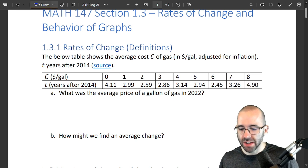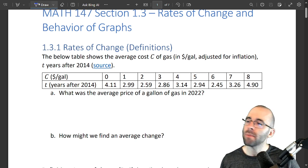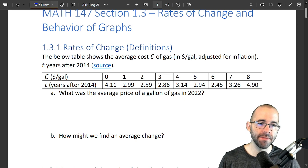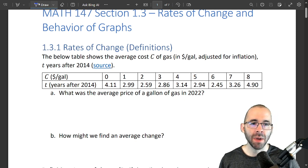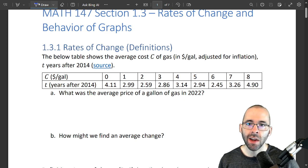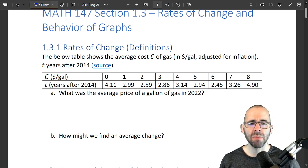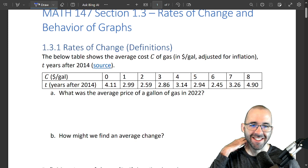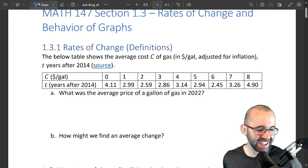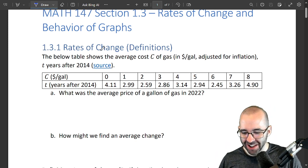So rates of change—we deal with these all the time. My car gets 30 miles a gallon, or I get paid $15 an hour. These are all rates of change. We're going to start with some definitions, some basic stuff, and then get into some more exciting stuff in these future videos.